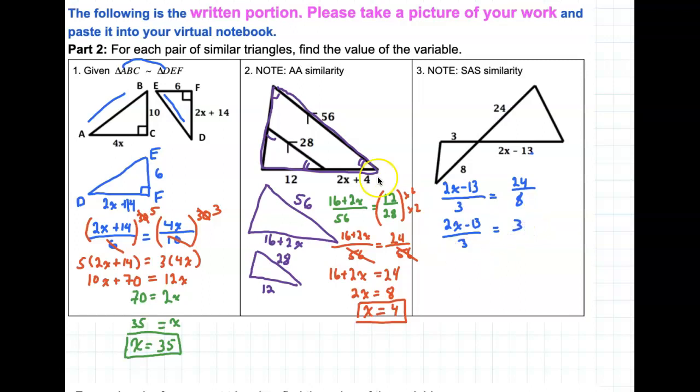So now to clear the fractions, all I have to do is multiply everything, both sides, by 3. That will alleviate the fractions. So I'll have 2X minus 13 is equal to 9, and if I add 13 to both sides, 2X is equal to 22, so X equals 11.